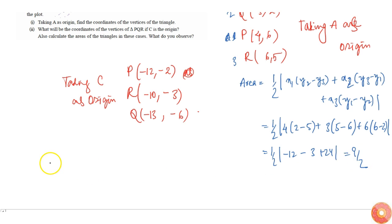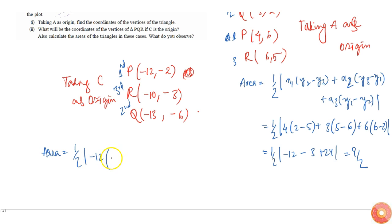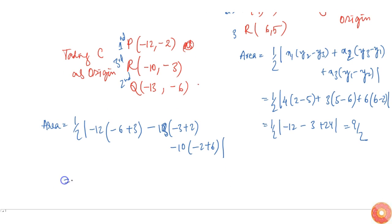Now taking the C-origin points and finding the area — half into minus 12 times (minus 6 minus minus 3) plus minus 13 times (minus 3 plus 2) plus minus 10 times (minus 2 plus 6). This becomes half into minus 12 times minus 3, which is plus 36, minus minus 13 times minus 1, which is plus 13, minus minus 14.